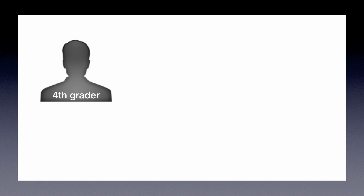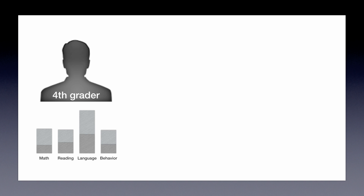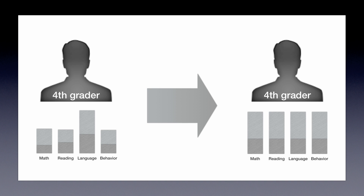So if you say, 'I have a kid in fourth grade with this level of skill in math and this level of skill in reading, who has these issues going on, and I want that kid to do this,' we should be able to say, given who your kid is and what you want them to do, these are the things you should be doing because they give you the highest probability.